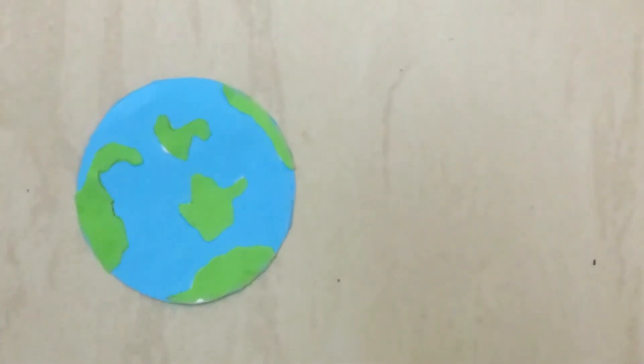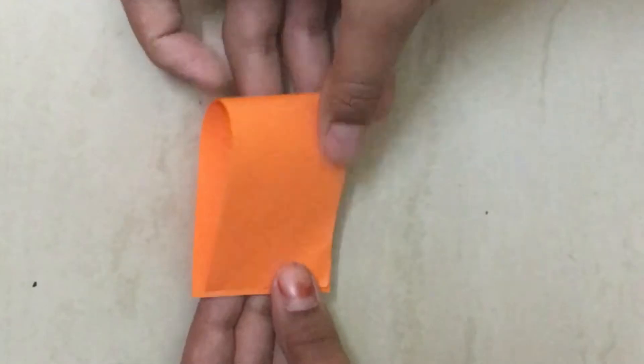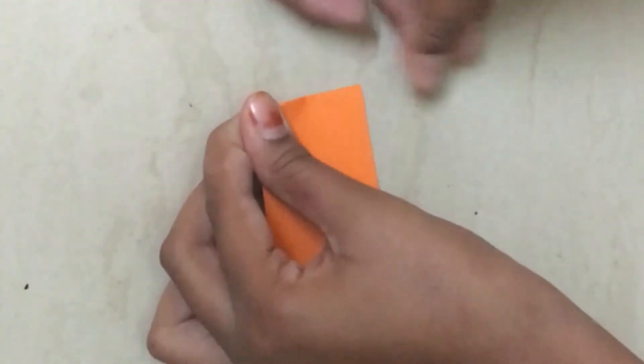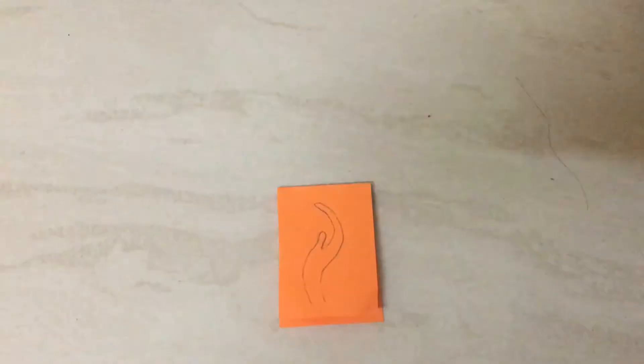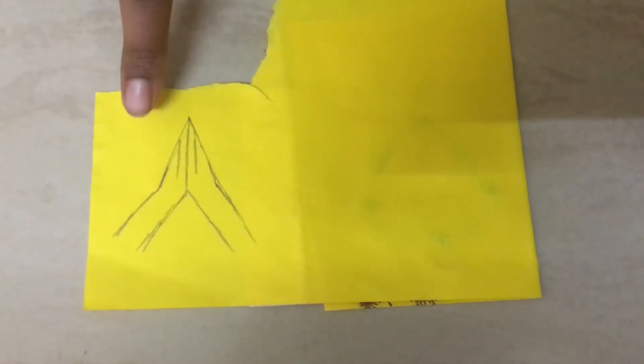Our Earth is ready. Now we'll make the hands. Now on a yellow paper, draw like this and cut.